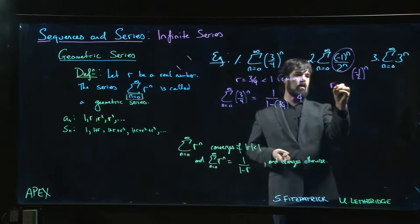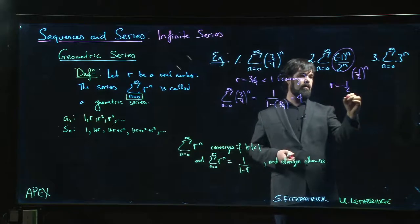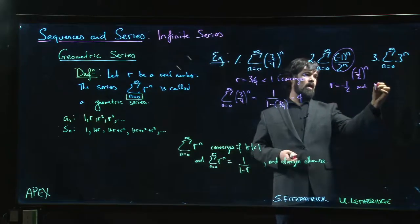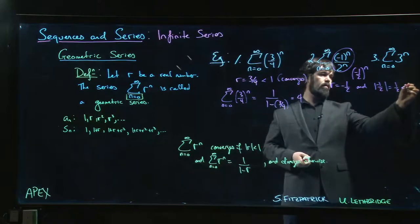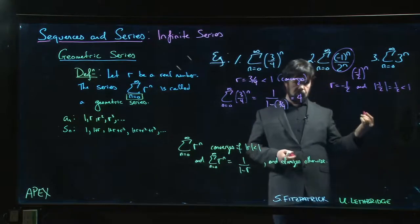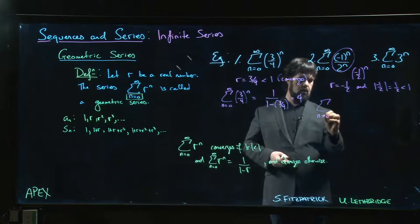Alright, it's in the right form. So what's our r? r is minus one half, and we know that the absolute value of minus one half is one half, which is less than one, so again we have a convergent series.